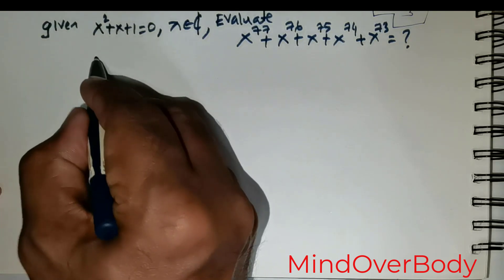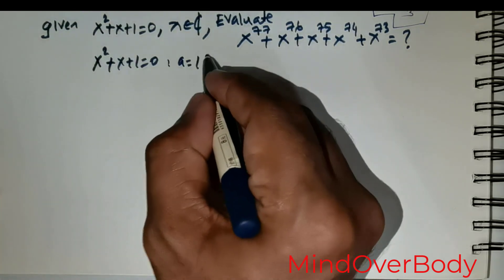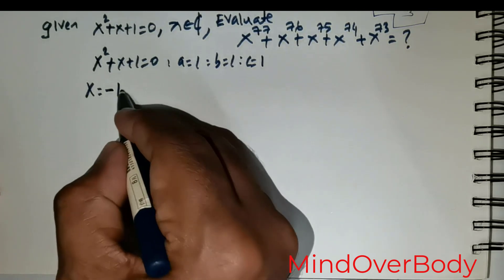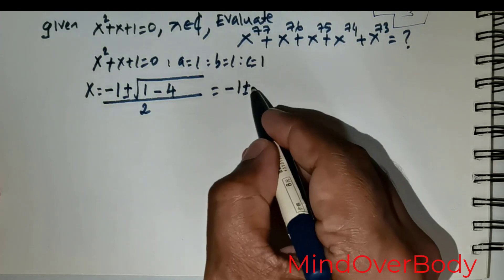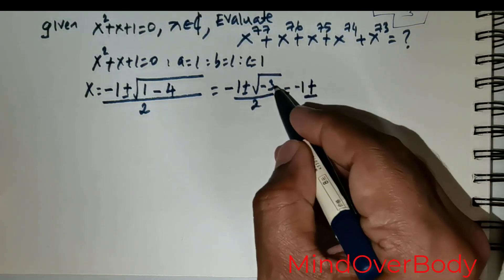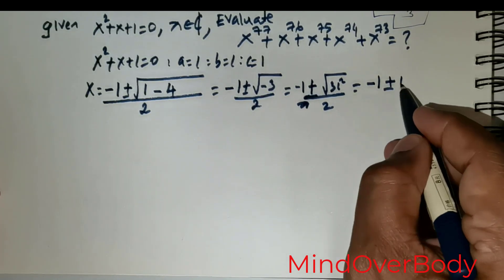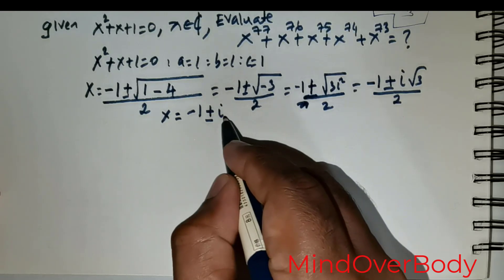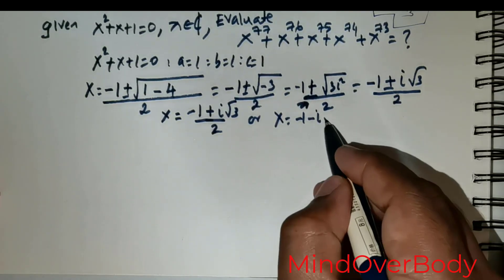What most students would do is start off by saying that x squared plus x plus 1 is equal to 0 is a quadratic, so let a equal 1, b equal 1, and c equal 1. They would compute the discriminant: negative 1 plus or minus root of 1 minus 4, divided by 2, which is negative 1 plus or minus root of negative 3 divided by 2. Since x is complex, this rewrites as negative 1 plus or minus i times root of 3, divided by 2.